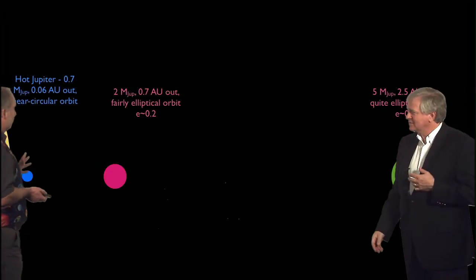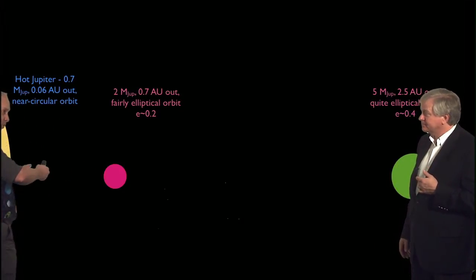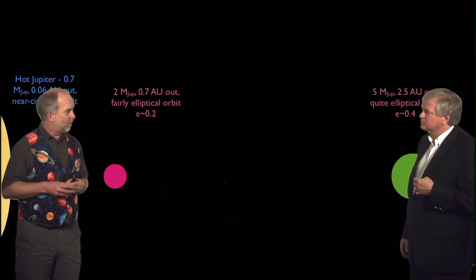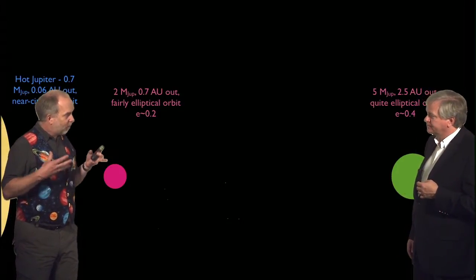Well, one thing that saves us is these things are quite well separated. So even though they're elliptical, they don't come that close. The other thing that saves us is these things are actually in what are called resonant orbits. We get this in our own solar system. For example,